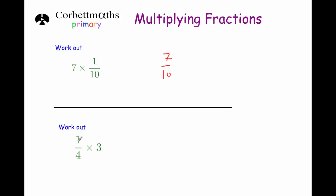Next, a quarter times 3. Even though it's written the other way around, remember a quarter times 3 is the same as 3 times 1 quarter — so 3 lots of 1 quarter would be 3 quarters.